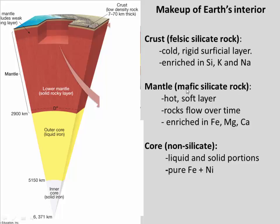In particular, the mantle is what we would call a mafic silicate rock. Mafic refers to rock that's enriched in iron, magnesium, and calcium. One of the remarkable things about the mantle is that it is so hot that it actually flows very slowly, like molasses over time — that's the process of convection, which we'll see in a minute. The mantle is about 3,000 kilometers thick in its own right.